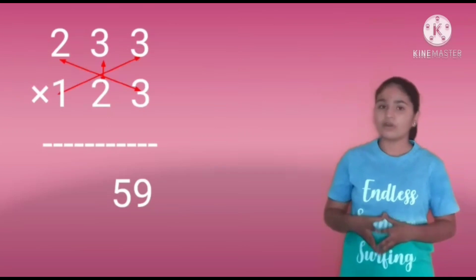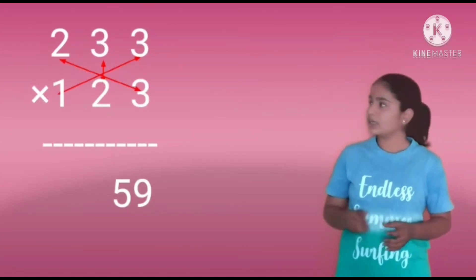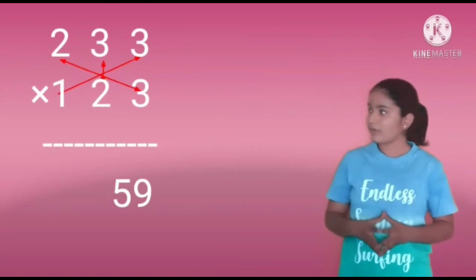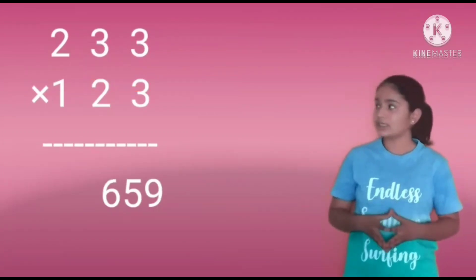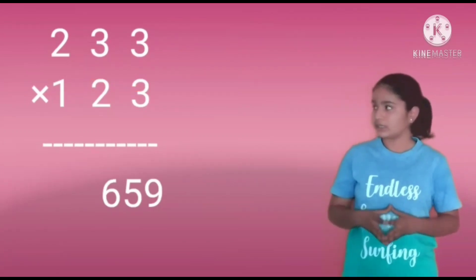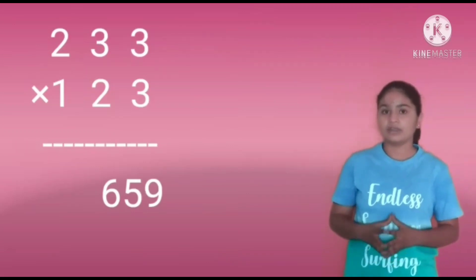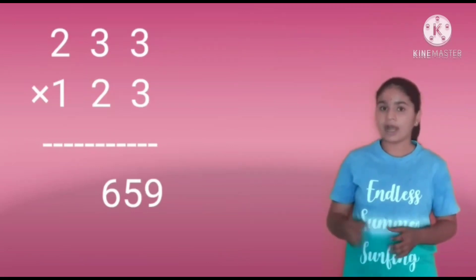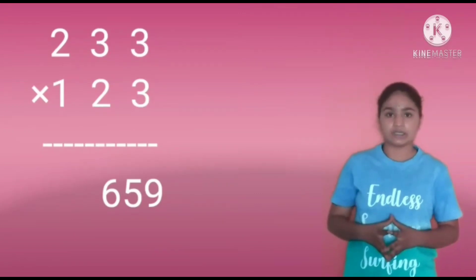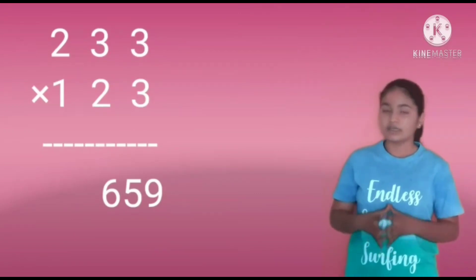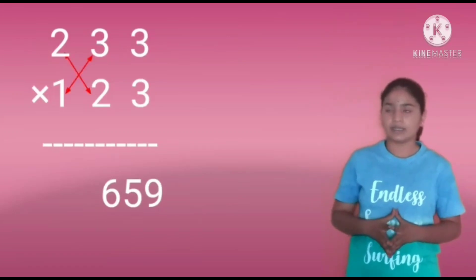Next, we have to do all-digit multiplication. That is 2 into 3, 3 into 1, and 3 into 2. It will be 6, 3, and 6. The answer will be 15. And there is carry left over. Add the carry to 15, it will be 16. Write the 6 in the 100th place and keep 1 as carry.